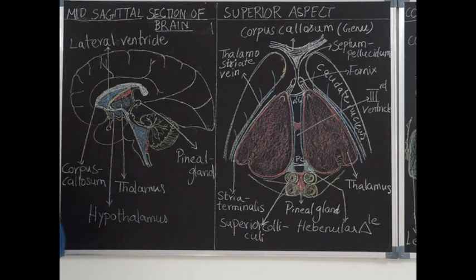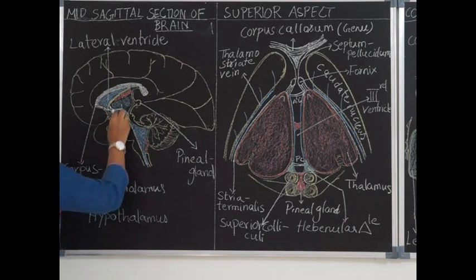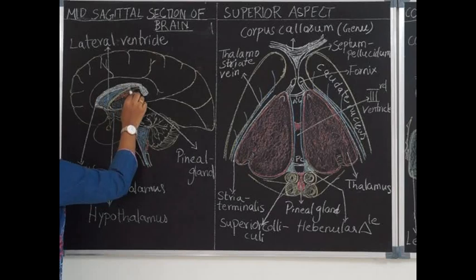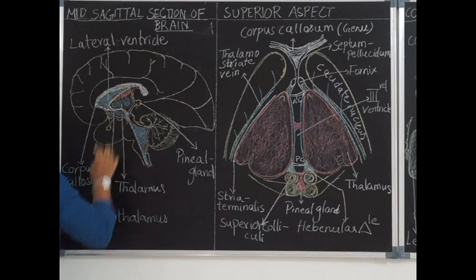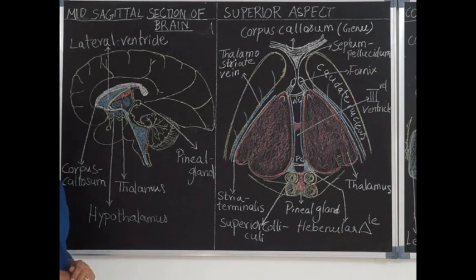The components of pars ventralis are hypothalamus and subthalamic nuclei. Pars dorsalis consists of thalamus, metathalamus and epithalamus.